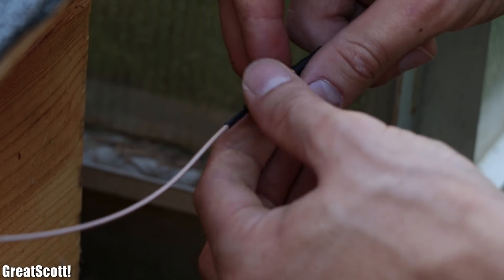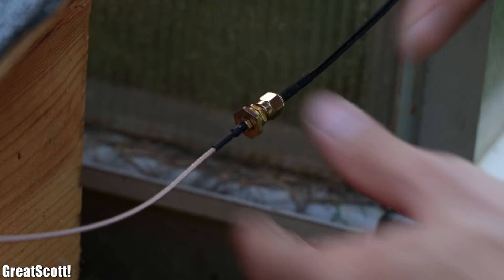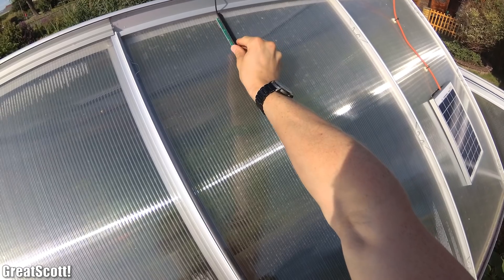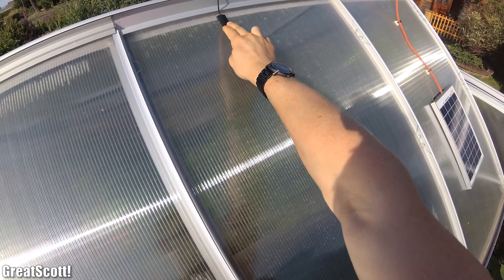Last but not least I added a better antenna to the LoRa boards which I positioned on top of the greenhouse to achieve a more stable connection to my router. And those were basically all the changes.